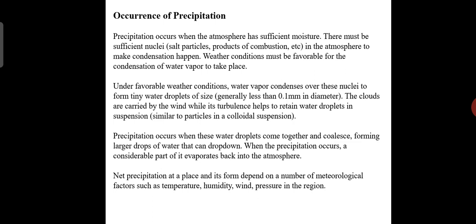Precipitation occurs when these water droplets come together and coalesce, forming large droplets of water that can drop down. When precipitation occurs, a considerable part of it evaporates back into the atmosphere. Net precipitation at a place and its form depend on a number of meteorological factors such as temperature, humidity, wind, and pressure in the region.